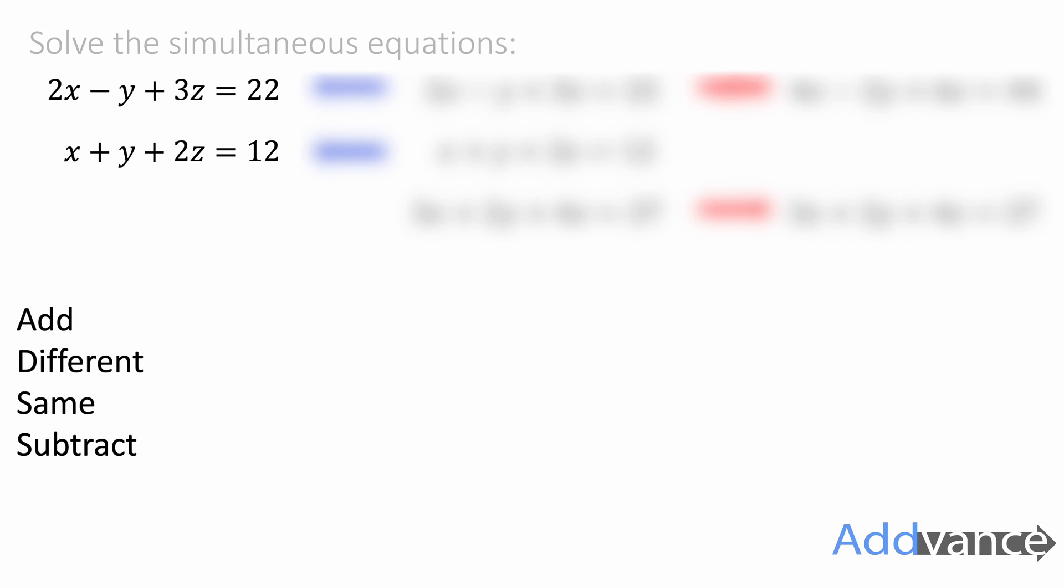Let's look at the first two pairs and we're going to think about add if they're different, same subtract. The minus y and the positive y are different. They've got different signs, minus and positive. So they're different. We're going to add, add if they're different.